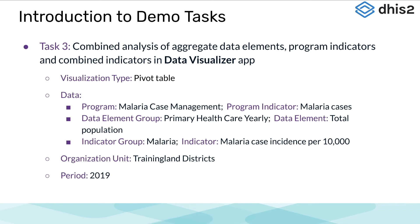The third task is to use a pivot table to view a combination of aggregate data, program indicators, and combined indicators. Here, we will show the number of malaria cases with the total population and a combined indicator of malaria incidence per 10,000 population at the district level in training land. We will view these data using a period of 2019.